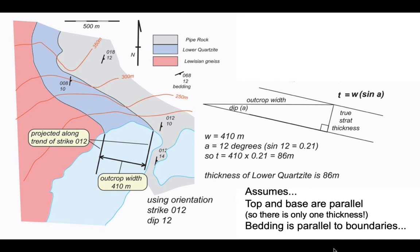Remember we've made some assumptions. We've assumed that the top and the base of this unit are parallel so there's only one thickness, and we've assumed that the bedding measurements we're using are representative of the orientation of the boundaries, therefore the bedding is parallel to those boundaries.